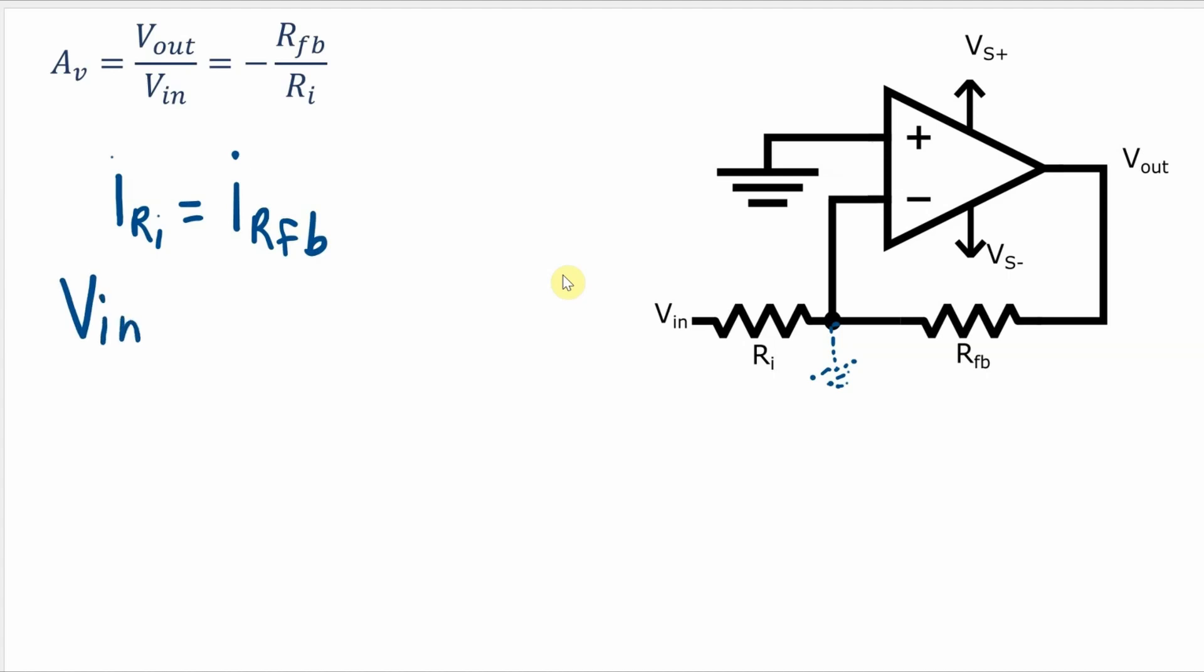So the voltage across RI is VIN minus zero and then if we divide that by RI then we get the current through RI. And then over here with the current still being defined as going in this direction the current through RFB will have to be zero minus VOUT over the feedback resistor.